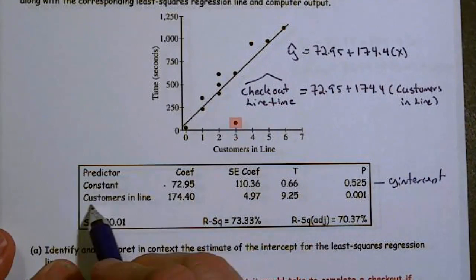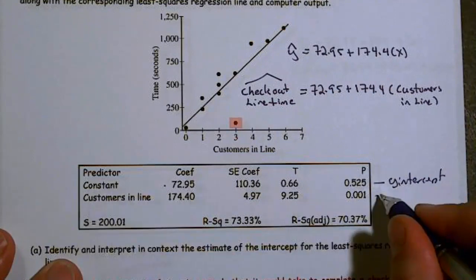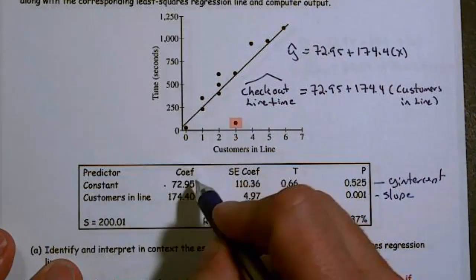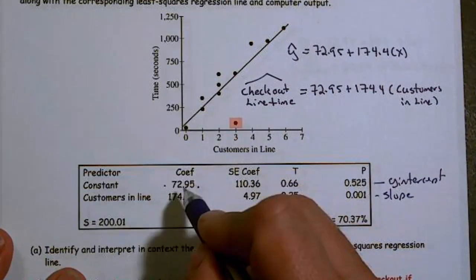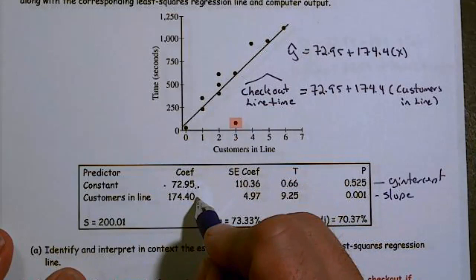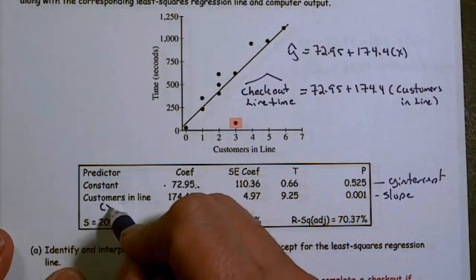And this entire line right here refers to the slope. So this right here will be my y-intercept, that'll be my slope, and this right here will be my x.